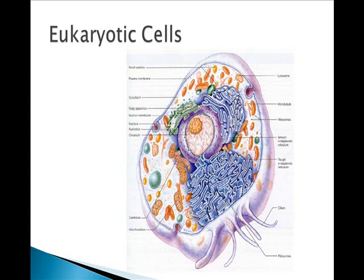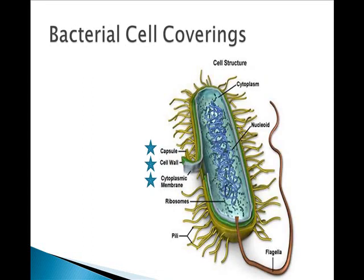Let's take a look at bacterial cell coverings. Each prokaryotic cell has a cell wall, a cell membrane, and a capsule. Archibacteria and eubacteria are separated by one molecule that is contained in their capsule. Archibacteria lack a protein-carbohydrate complex called peptidoglycan, and eubacteria have it.